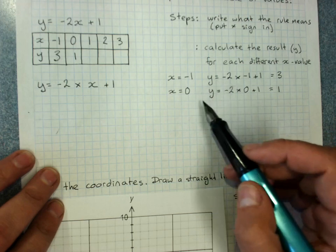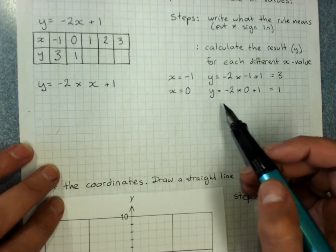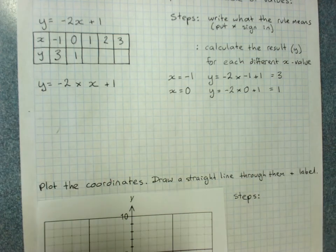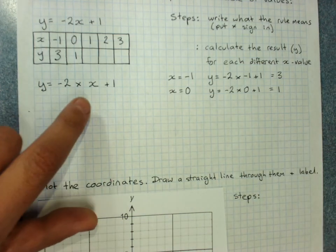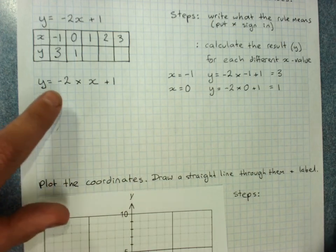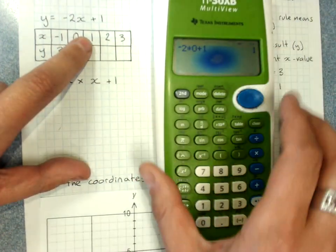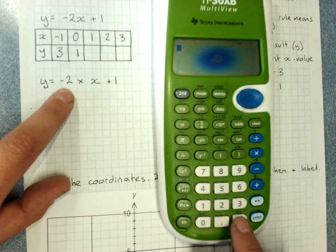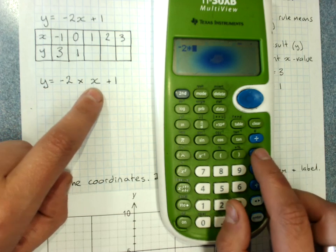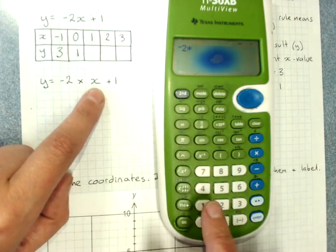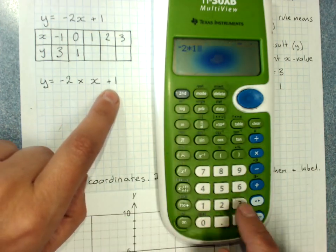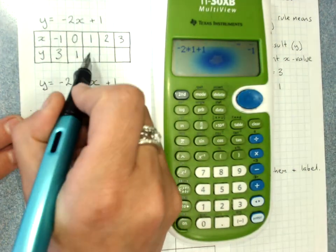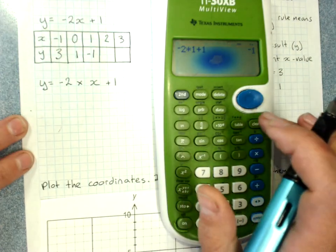Now, you don't actually have to write all these out, but if you're struggling, then you can, because it reminds you what to do. So we'll do the next one without writing it all out. But when x is 1, y will be negative 2 times x is now 1, plus 1 equals negative 1. And we write it in.